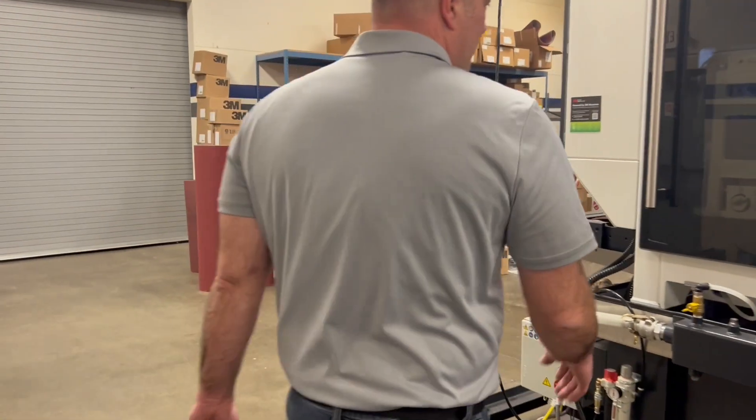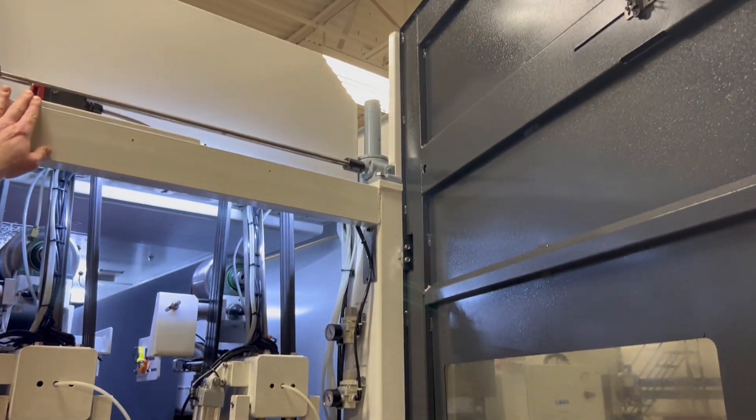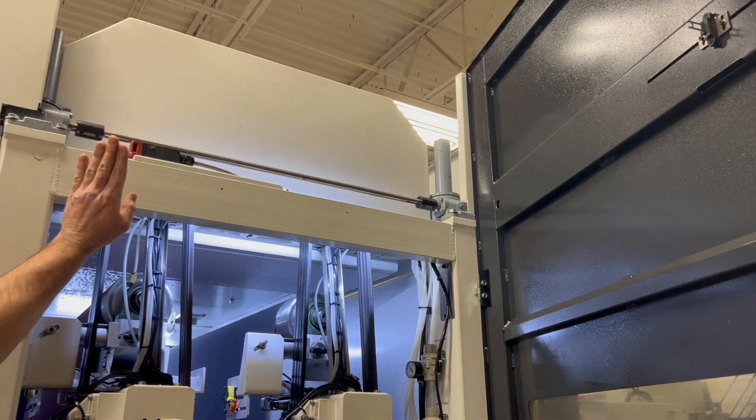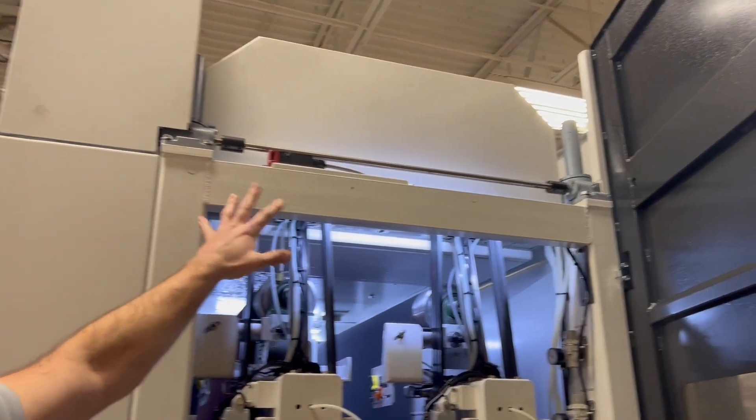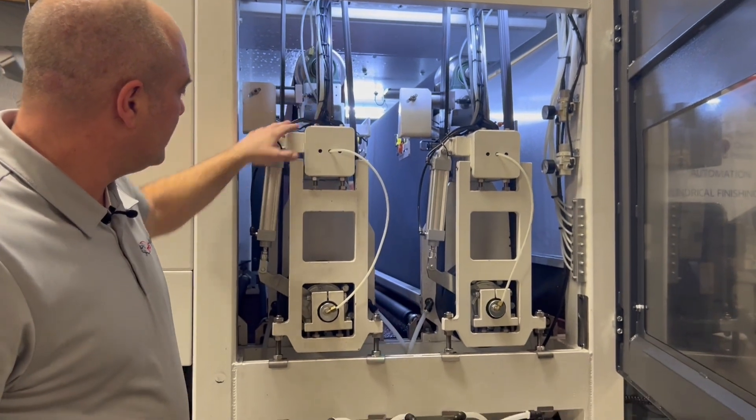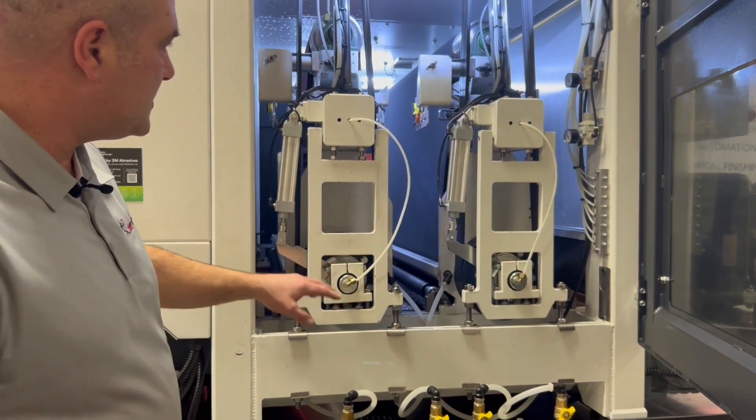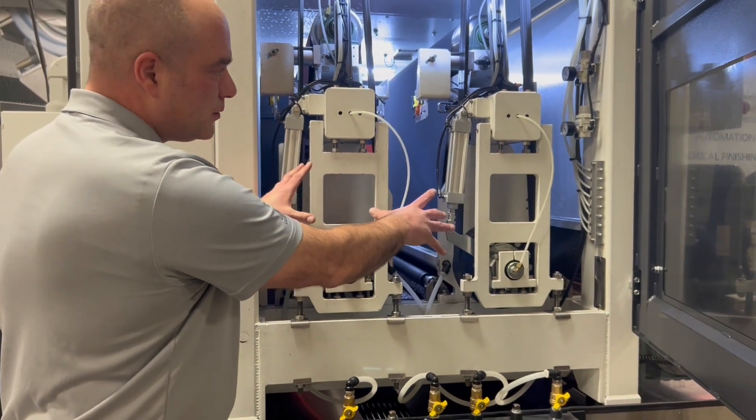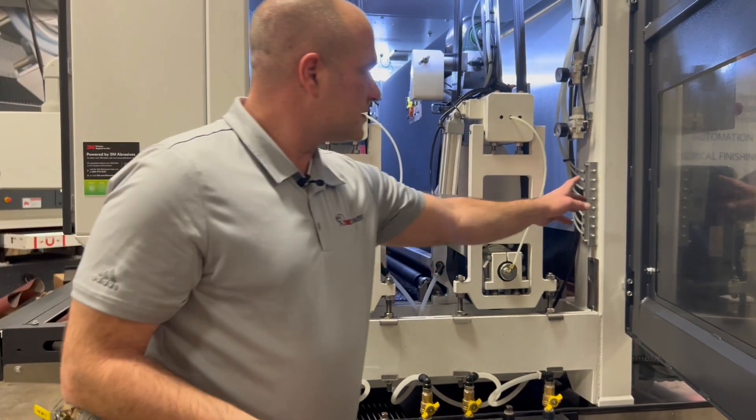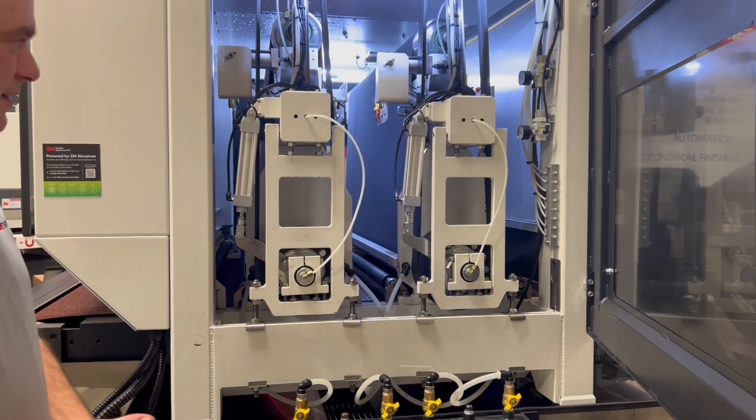As we move to the back of the machine here, pretty simple. This door is interlocked so if the machine is running and the door is open the machine will go ahead and shut down. But as you can see here we do have our tracking, our pop-up cylinders, our eccentrics for the drums. Everything is very easily accessible here also along with our grease system here for the high speed bearings.